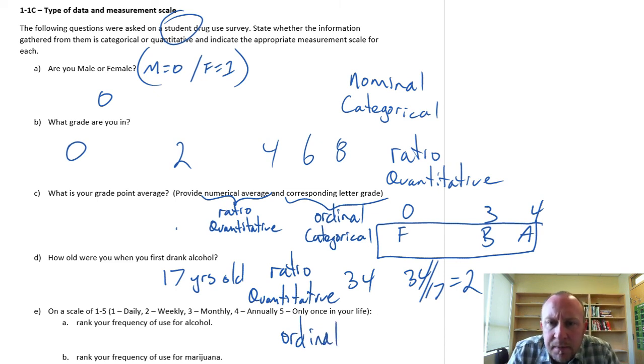This one is going to be an ordinal variable. Because again, I can rank individual observations or individual data points based on frequency of use. But the interval here wouldn't have any significant meaning. Only once in your life, or a 5, minus annually, or 4. That interval doesn't really have any meaning to it. So this is going to be an ordinal variable. So it's categorical.